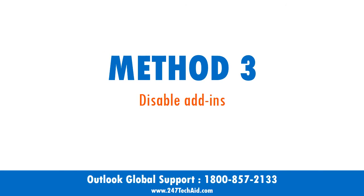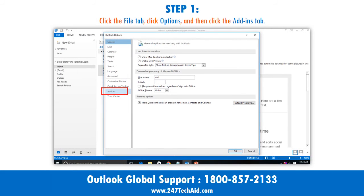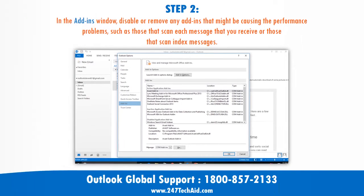Method 3: Disable add-ins. Step 1: Click the File tab, click Options, and then click the Add-ins tab. Step 2: In the Add-ins window, disable or remove any add-ins that might be causing the performance problems, such as those that scan each message that you receive or those that scan and index messages.